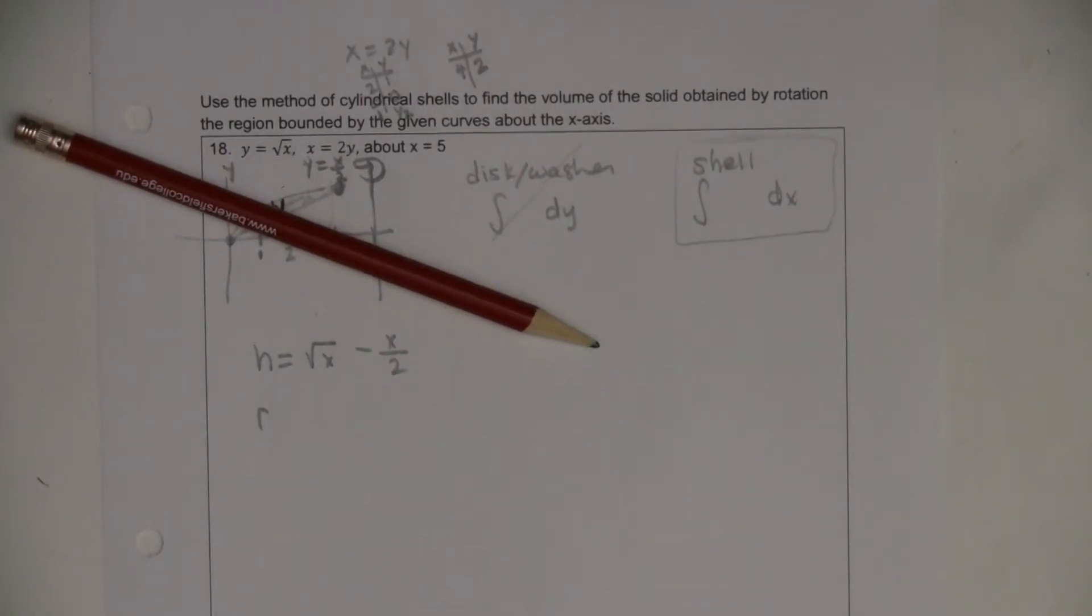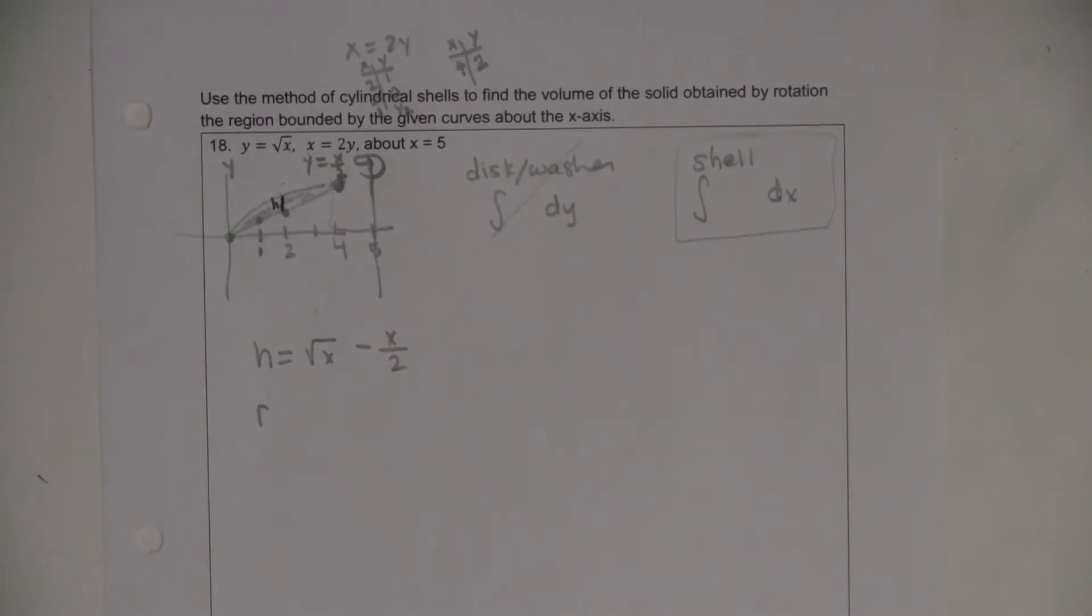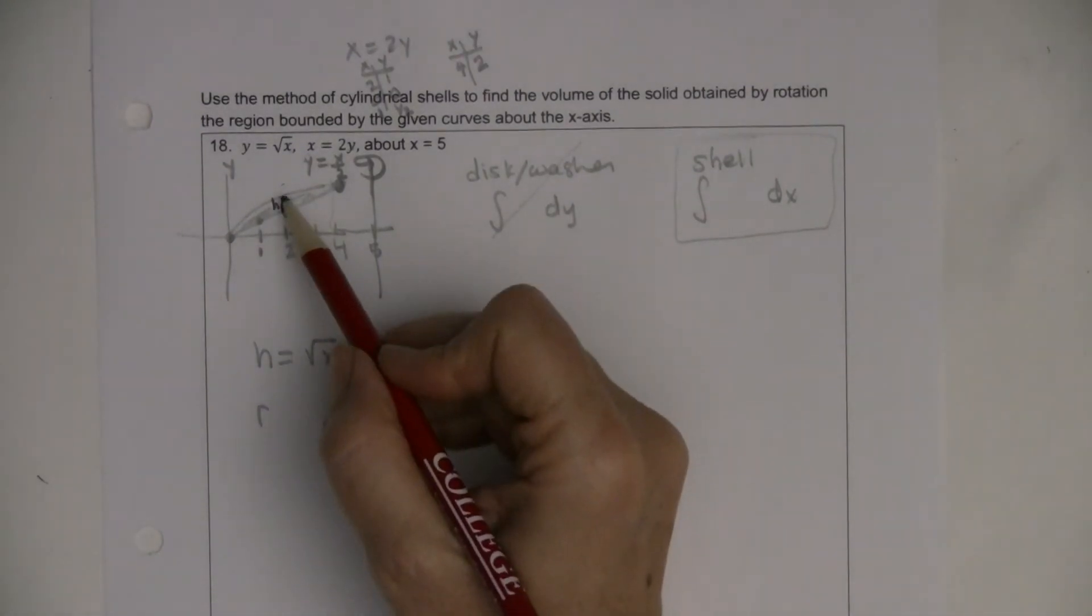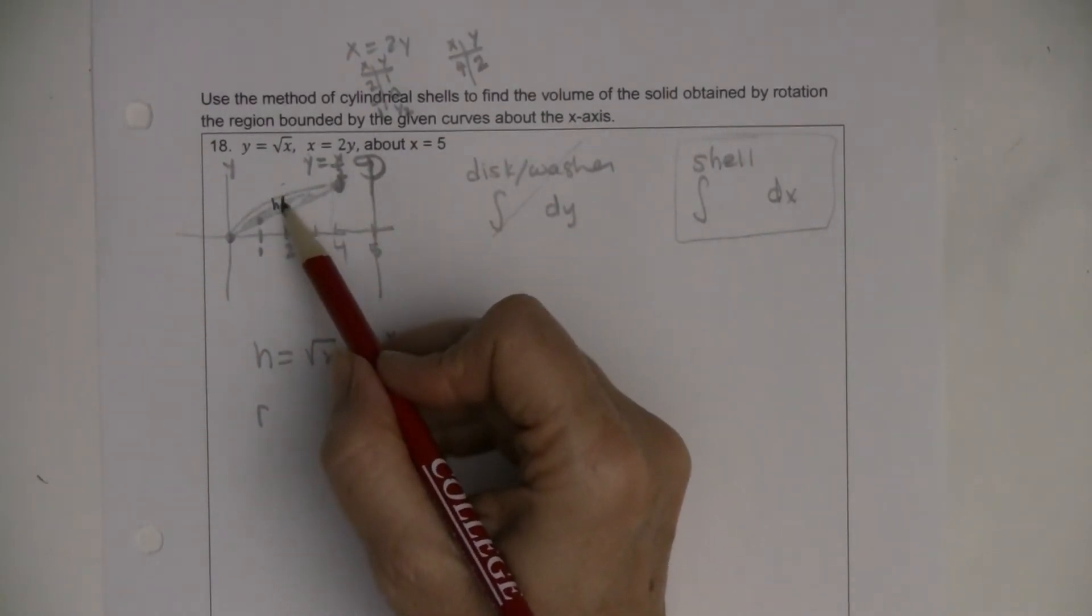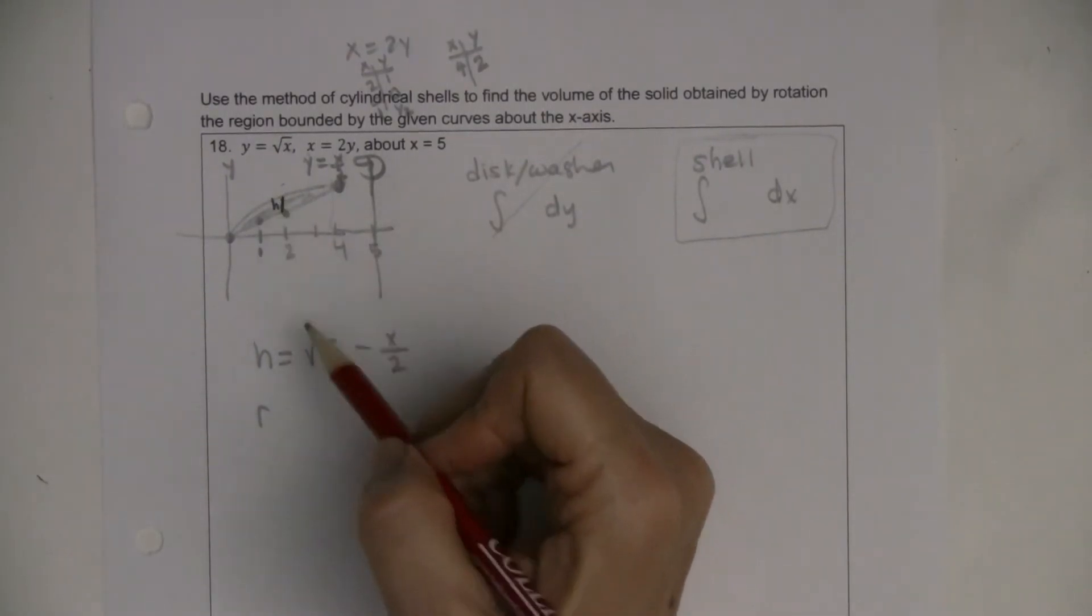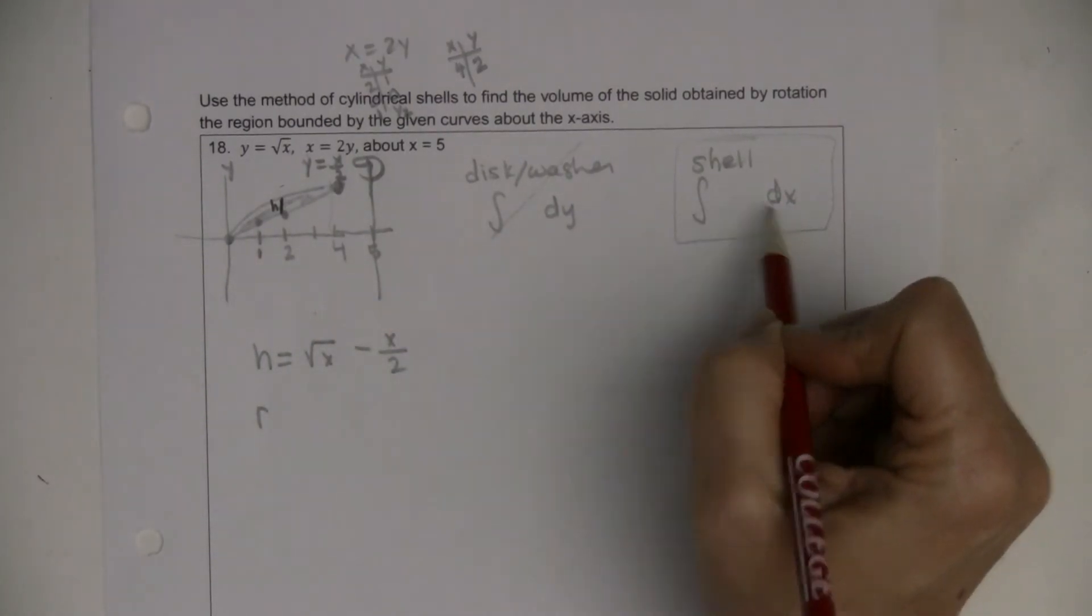I know it's crazy that I had to stop in the middle of problem 18 right when we had just figured out what our h is. Notice that h is parallel to the axis of rotation, so I've drawn it parallel. It's top curve minus bottom curve, and I want my stuff in terms of x.